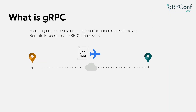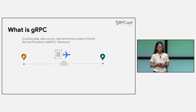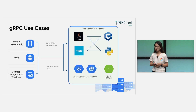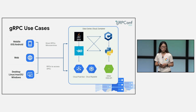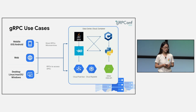First of all, gRPC is a cutting-edge, open-source, high-performance remote procedure call framework. It is the go-to standard in the industry. To put it in simpler terms, think of it as a super-fast flight service for your data — zipping your bits and bytes across the internet. It enables communication between a wide range of devices, from mobile phones to web browsers, to desktops, and to various back-end platforms. This versatility makes it perfect for building microservices and distributed applications, whether on-premise, in the cloud, or in containers.